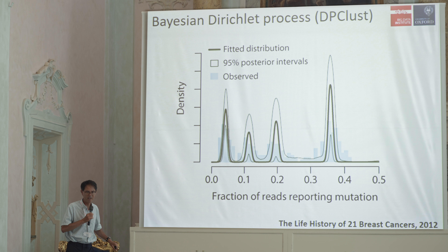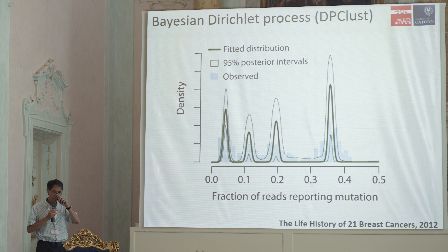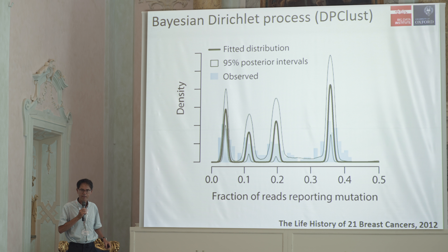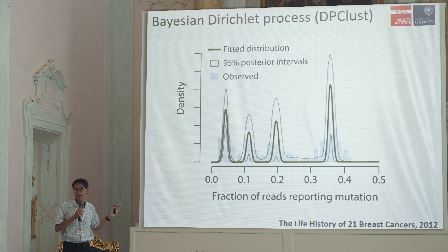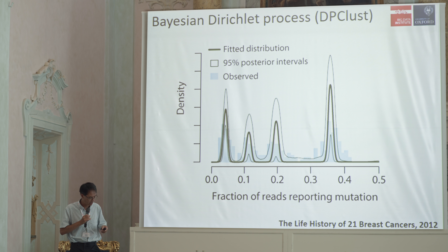In subsequent studies, we've moved towards using multiple samples more frequently. That study had only a single sample from each cancer, but in most studies of evolution, it's very advantageous to have multiple samples. When you have 10 samples from a tumour, you're clustering mutations in 10 dimensions — for each mutation, you have the allele frequency in each of your 10 samples, and you're trying to group mutations in this 10-dimensional space to identify subclones. I want to give a warning here: in that single sample study, we just clustered allele frequency and didn't really take account of copy number — we were able to do that because there were very few copy number changes and they all occurred very early.